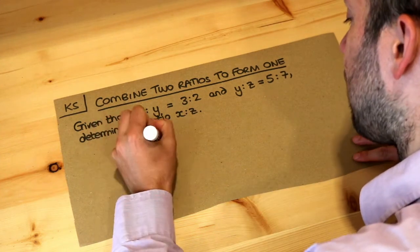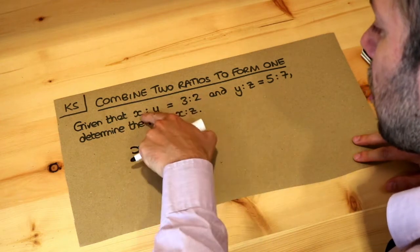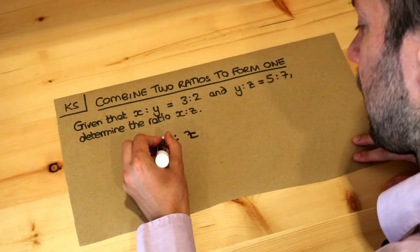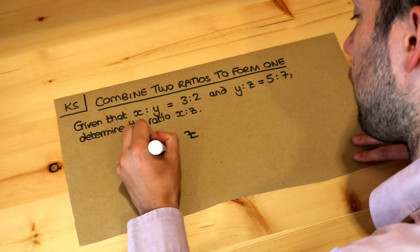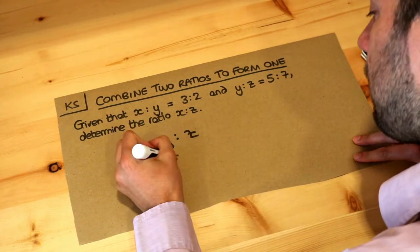Now the way I do this is to lay it out like this. So we've got x to y to z. Now we're told x to y is 3 to 2, so let's put that in the x and the y column: 3 to 2. And y to z is 5 to 7, so y to z is 5 to 7.